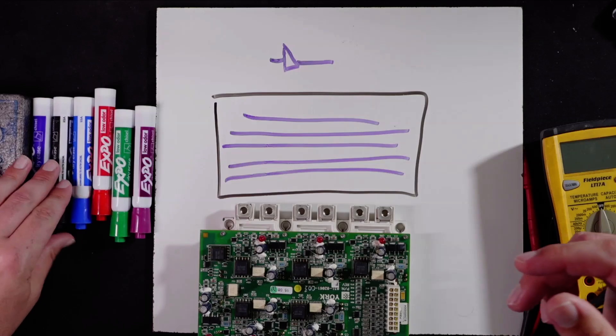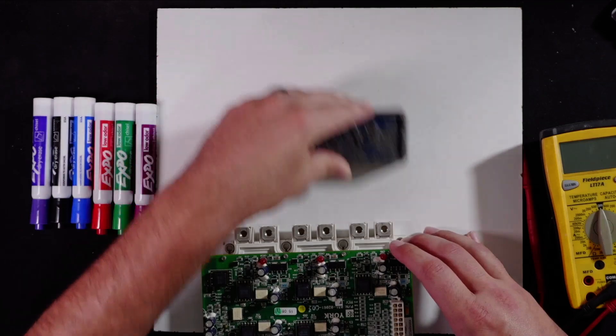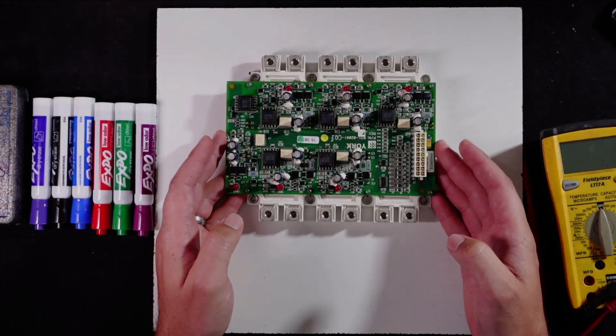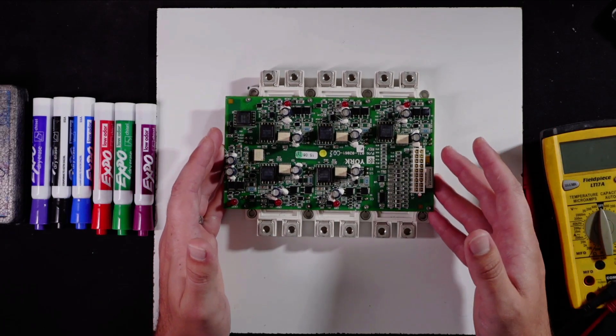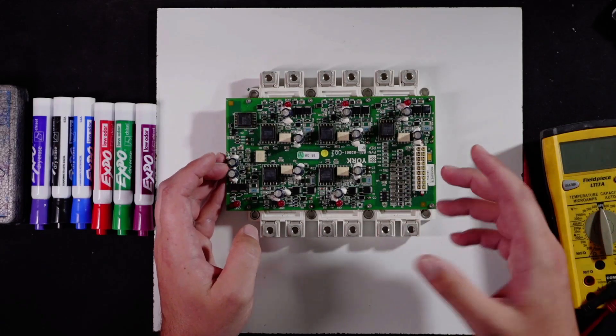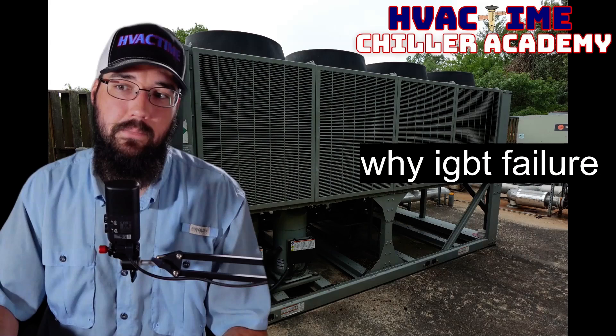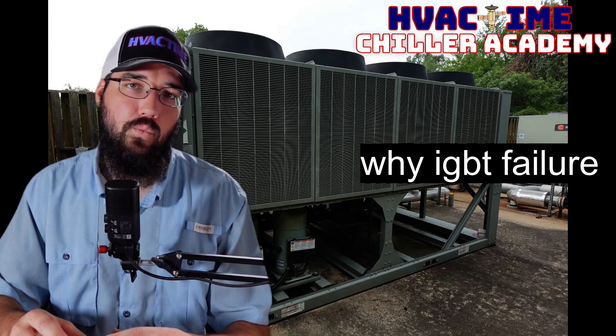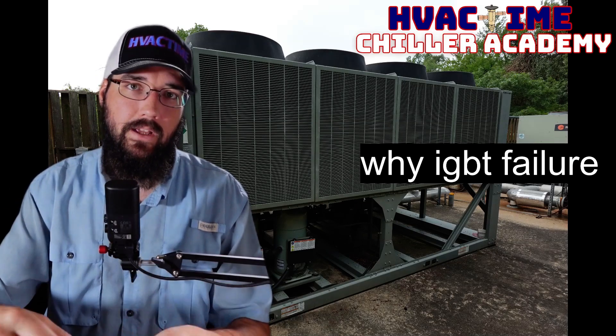So what that ends up leading to is you start having an actual gate failure where the gates themselves begin to just not process properly through them. One of the common signs I'll see of that is one, you could have a current motor current issue where you have motor current alarms. That could be because one of these gates is not outputting correctly. Another could be a grinding noise. So I've had it to where the compressor will sound like it has a bad bearing. When in reality, it's not a bad bearing. It's the IGBT.